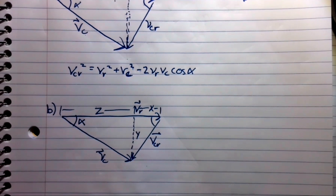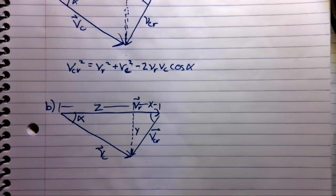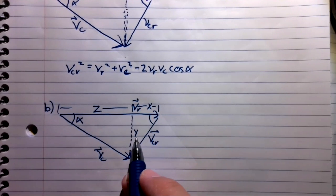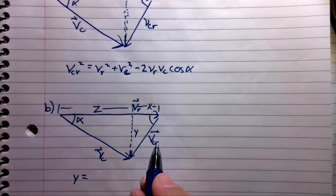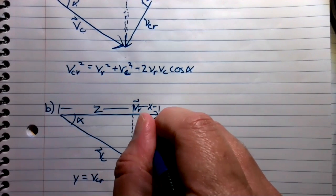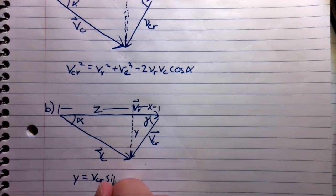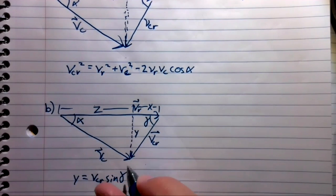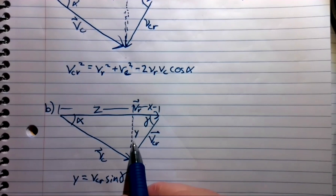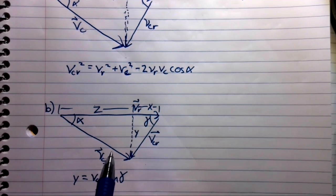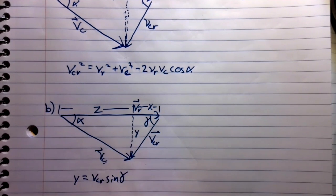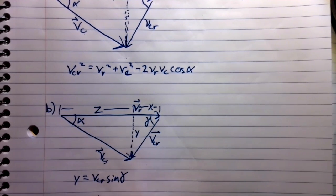This is going to be the law of sines — a very special property about triangles. We'll say Y equals VCR times sine of gamma, where gamma is the angle we're after. VCR times sine of gamma equals Y. And we just so happen to have another triangle where we know the angle and we know VCR, so we can also say Y equals VC times sine of alpha.